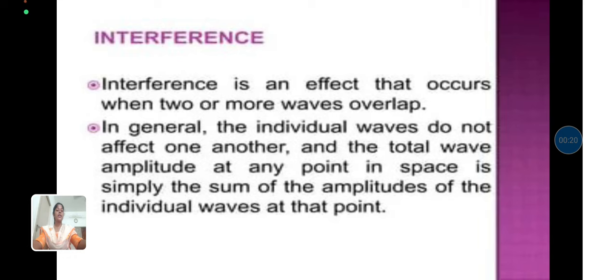Interference is an effect that occurs when two or more waves overlap. In general, the individual waves do not affect one another, and the total wave amplitude at any point in space is simply the sum of the amplitudes of the individual waves at that point.